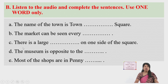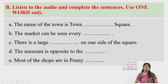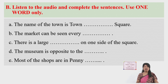Question C: there is a large blank on one side of the square — what specific thing is there? You have to write it. Question D: the museum is opposite to the blank — which building is it opposite to? You have to write that building's name. Question E: most of the shops are in Penny blank — is Penny the name of a building, a river, or a road? You have to find it out after listening.